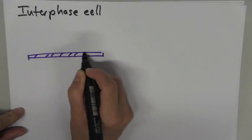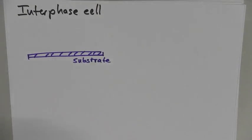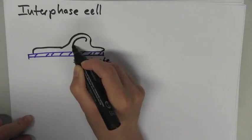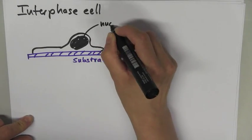When we grow animal cells in culture, we see that in interphase, that means cells that are not dividing, cells are very much spread out on the substrate and have a flat and irregular shape.